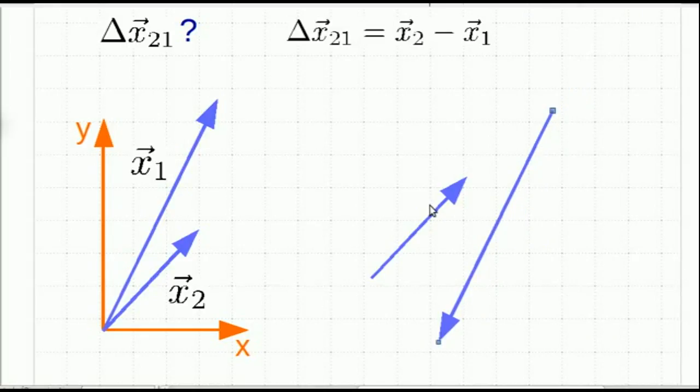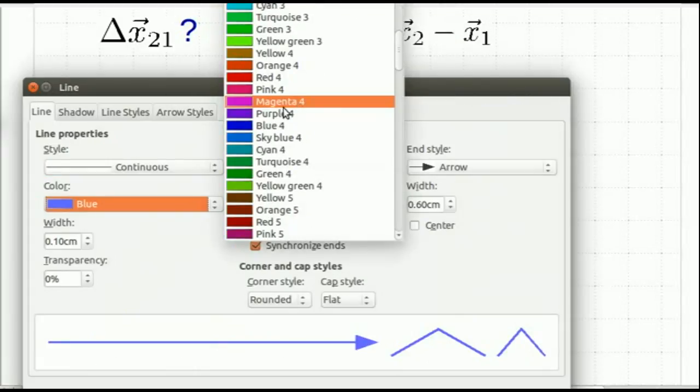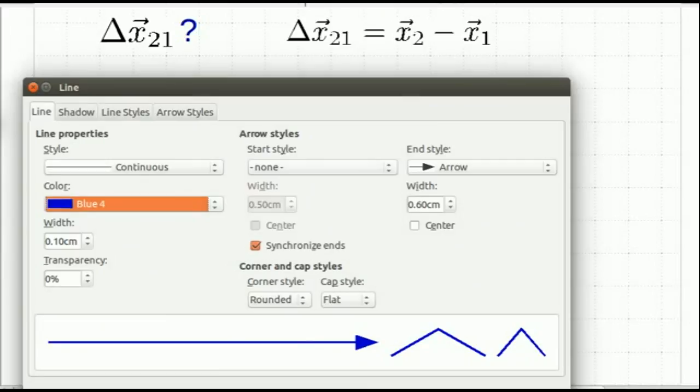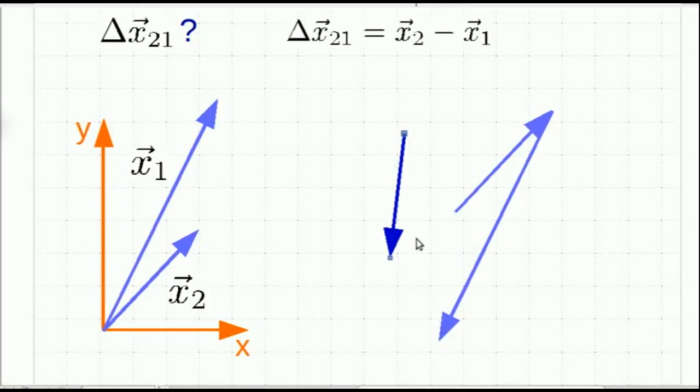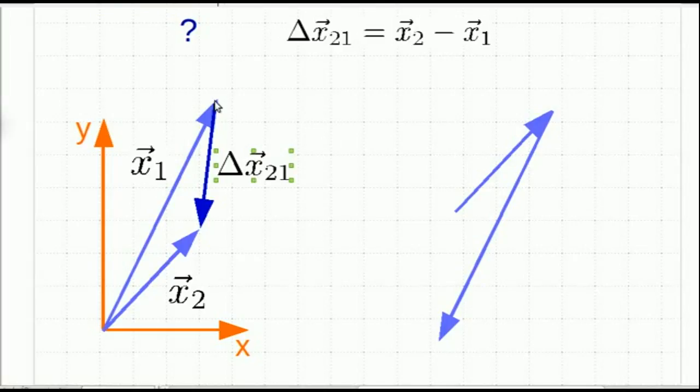And so if I put them head to tail like so, now I'm going to get delta x looking like this. Just change its color so it's clear which one it is. So there is delta x. I'll just slide it over and here you see it is as we thought, the vector which points from the initial location to the final location.